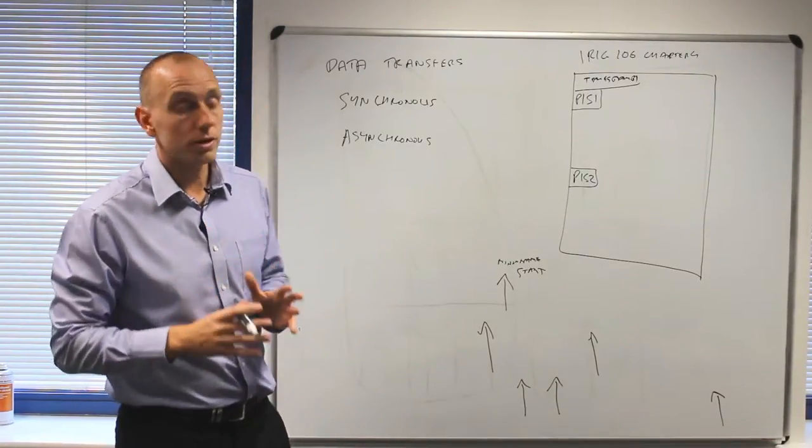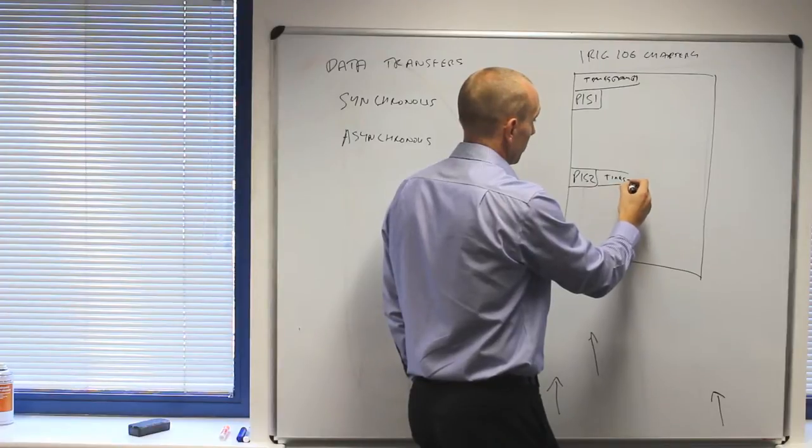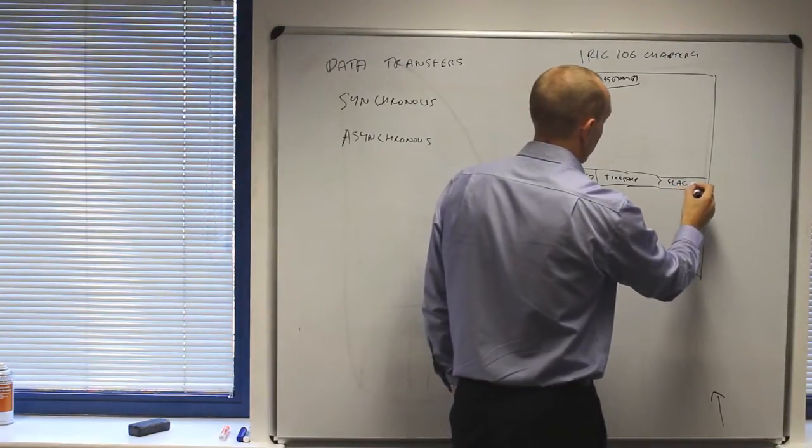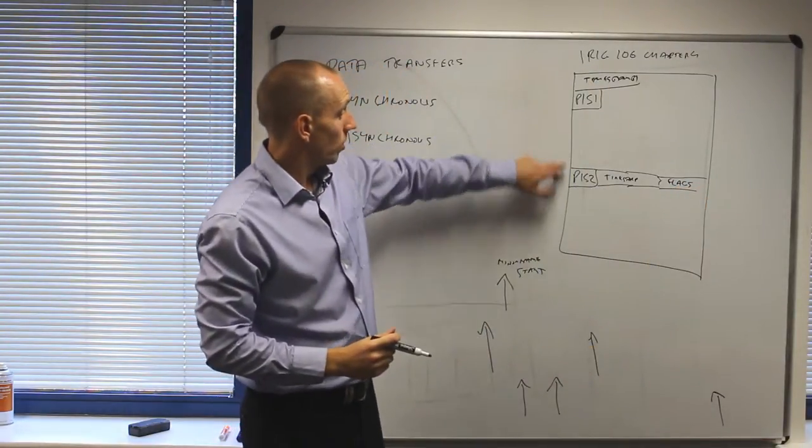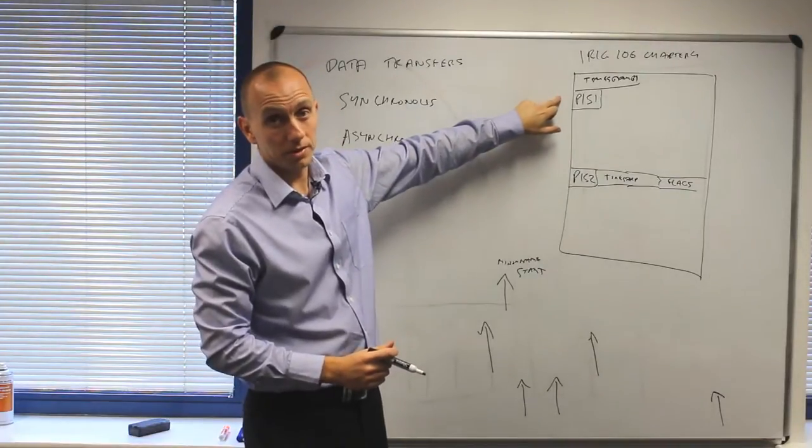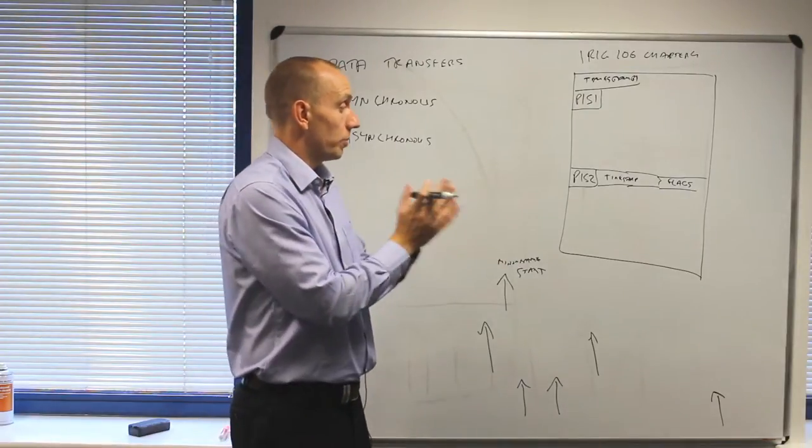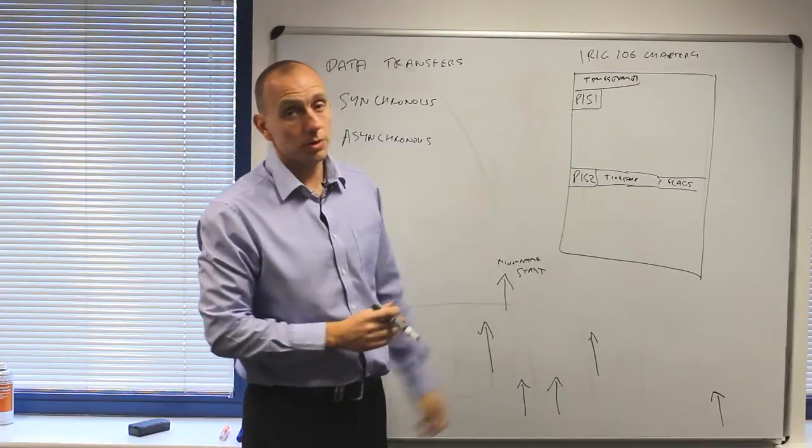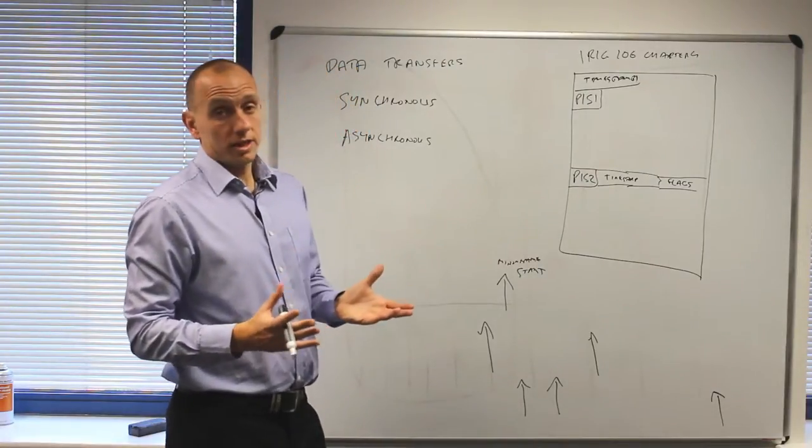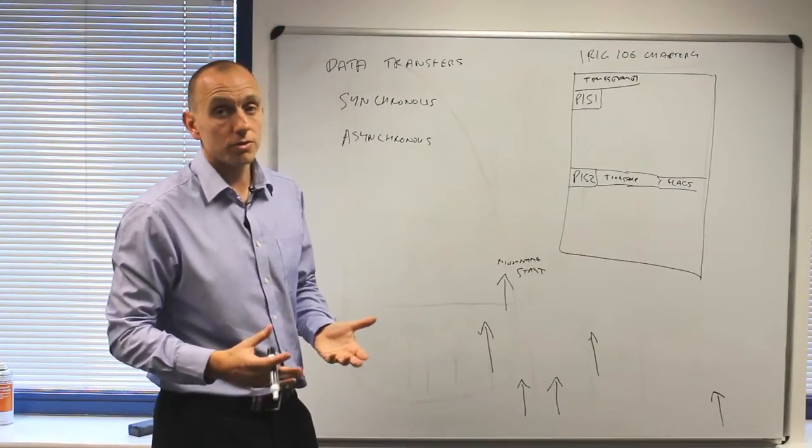Now you can account for this by adding extra data into the PCM frame. For each parameter you can add a timestamp to say exactly when it was acquired and you can add some flags which tell you whether this is the next sample after this sample whether another sample came in between or whether it's actually this sample again because nothing happened. So there is enough metadata that you can send down your PCM stream to tell you exactly when each of these asynchronous parameters occurred but that uses up an awful lot of bandwidth and it can mean that for a 16 bit parameter or 12 bit parameter you might have to send multiple words of data and that's very inefficient given the amount of telemetry bandwidth that's available.